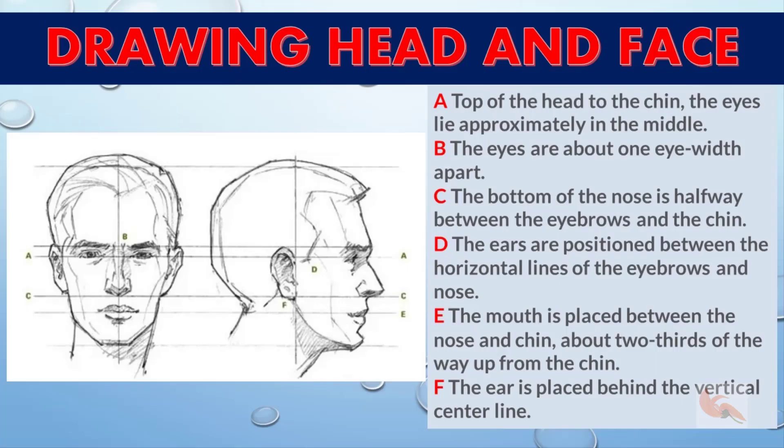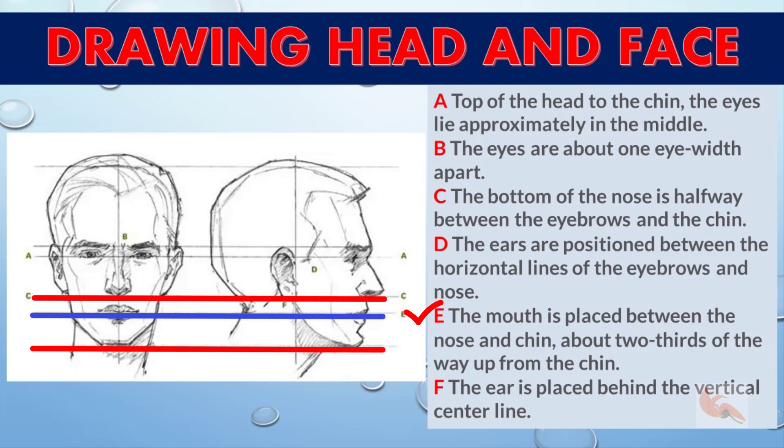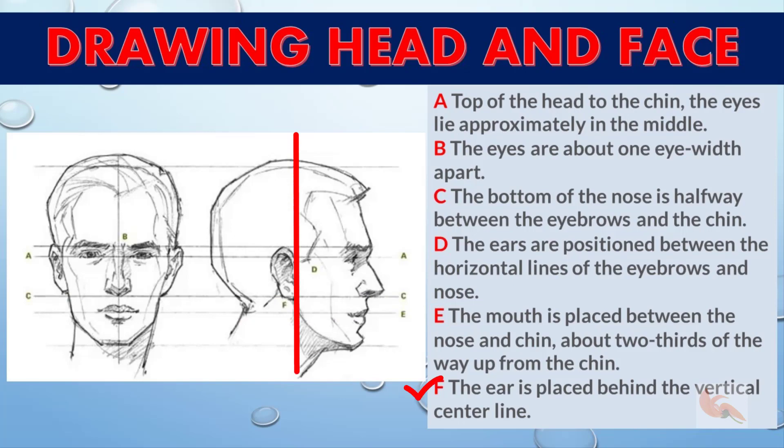Let's see some more related measurements. Top of the head to the chin, the eyes lie approximately in the middle. The eyes are about one eye width apart. The bottom of the nose is halfway between the eyebrows and the chin. The ears are positioned between the horizontal lines of the eyebrows and nose. The mouth is placed between the nose and chin and about 2 thirds of the way up from the chin. The ear is placed behind the vertical center line.